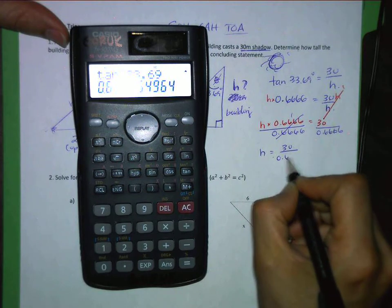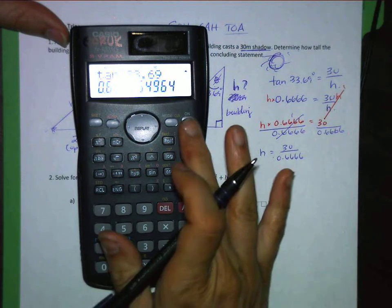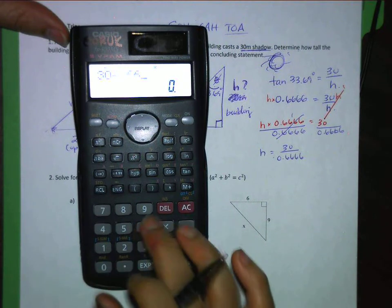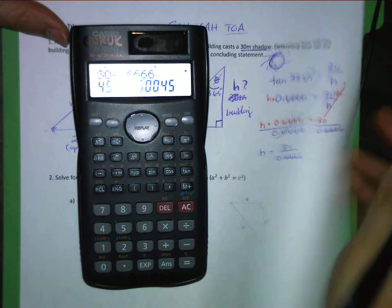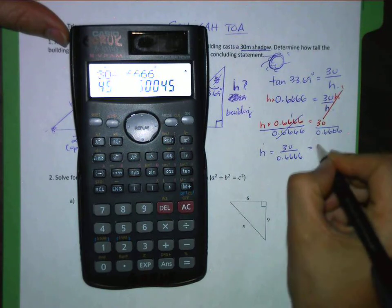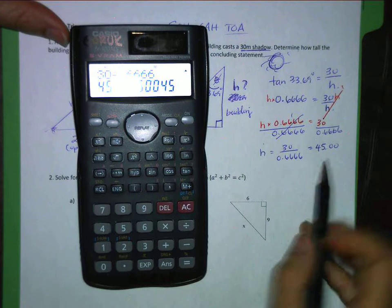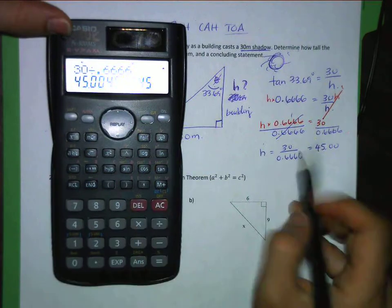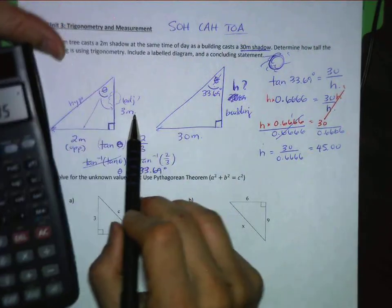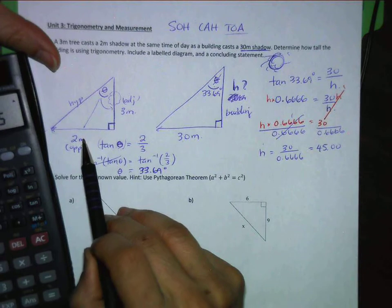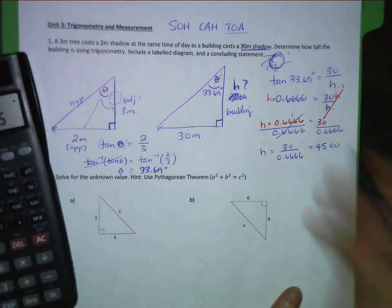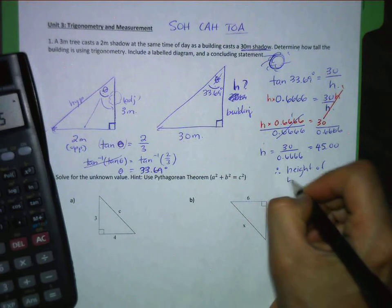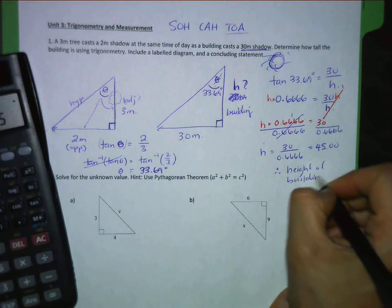So I'm going to go ahead and do that. 30 divided by 0.6666 equals and I get 45. 45.00. Now, I'm not done because it's a word problem. So I have to also think about what the units of that are. If I go back and look, the height was 30 meters. This was all in meters. The shadows were in meters. Therefore, the height of the building is 45 meters. Done. So you can see the final answer.